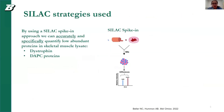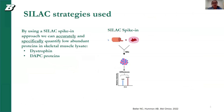There are a few different SILAC strategies I'll be going over. The first is a standard SILAC spike-in approach, where you have an unlabeled sample that is spiked with a heavy standard that closely matches what is being studied. In our case, that is muscle. We culture heavy-labeled myotubes, spike them, and we are able to quantify the relative abundance of our sample and compare it to other samples. By using the SILAC spike-in approach, we can accurately and specifically quantify low-abundant proteins in skeletal muscle lysate.